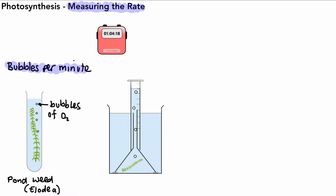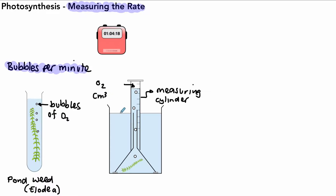We can be slightly more involved and use a piece of apparatus with a funnel linked up to an inverted measuring cylinder. The pondweed photosynthesizes at the bottom, the bubbles collect at the top, and we can measure the volume of oxygen in centimeters cubed. Using a timer as well, we would express the rate as centimeters cubed per minute.